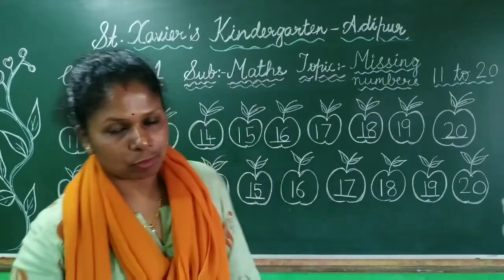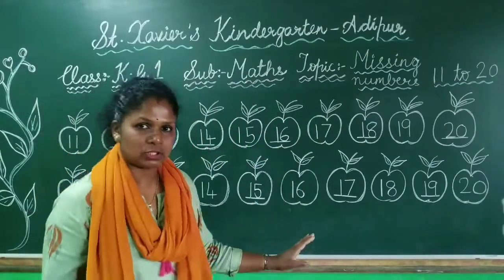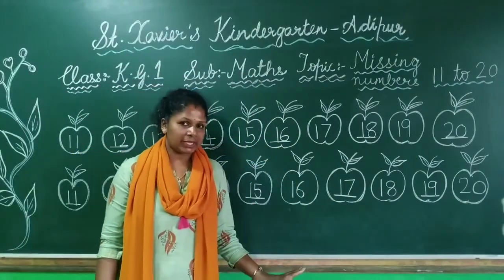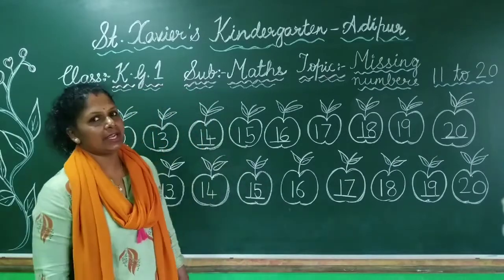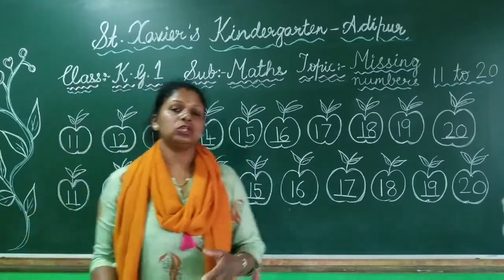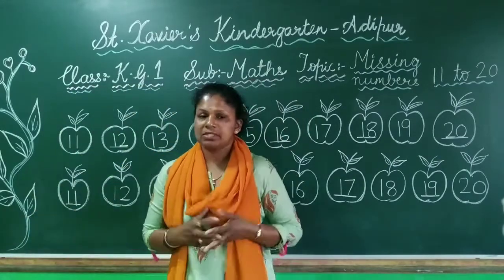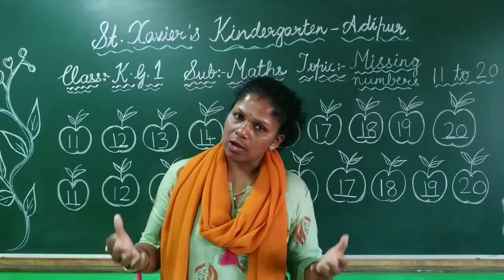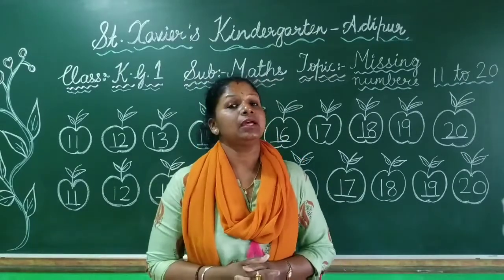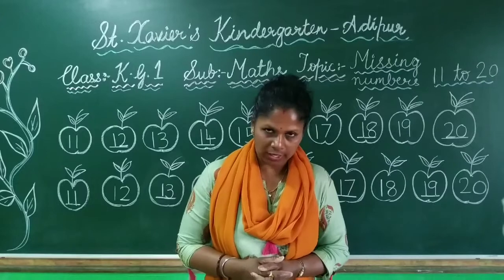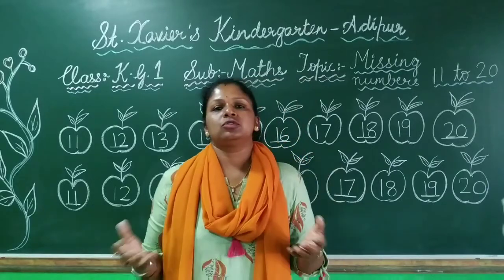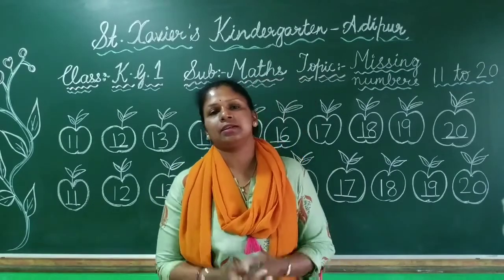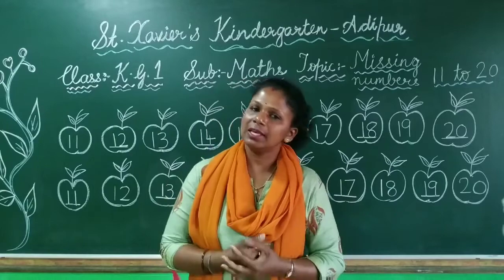Okay, so you need to understand this, children — missing numbers 11 to 20. Yes. Well. So children, make sure you practice missing numbers 11 to 20 at home. Okay? So children, see you in the next class. Children, bye-bye. God bless you. God bless you.